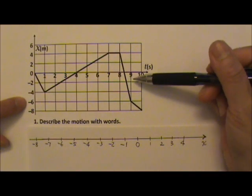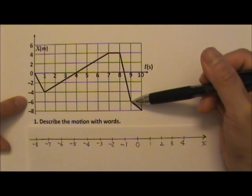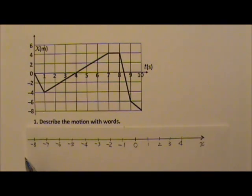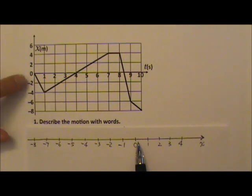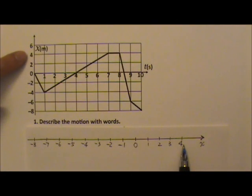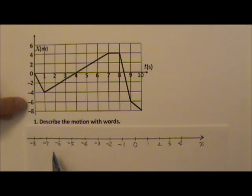The next second, between t equals 9 and 10 seconds, the object moves from x equals negative 6 to x equals negative 8. So on the x-axis, the object starts at x equals 0, moves to negative 4, then goes past 0 to x equals 4, arriving at 4 at t equals 7 seconds. Then it stays there for one more second, then moves to negative 6, and then to negative 8.